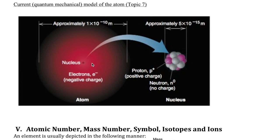We have something called the nuclear model of the atom, where the atom is composed of a nucleus in the center that contains both the proton and the neutron. The nucleus is really the bulk of the mass of the entire atom. The proton and neutrons are very heavy relative to the electrons, and the electrons are clouds that surround the nucleus.